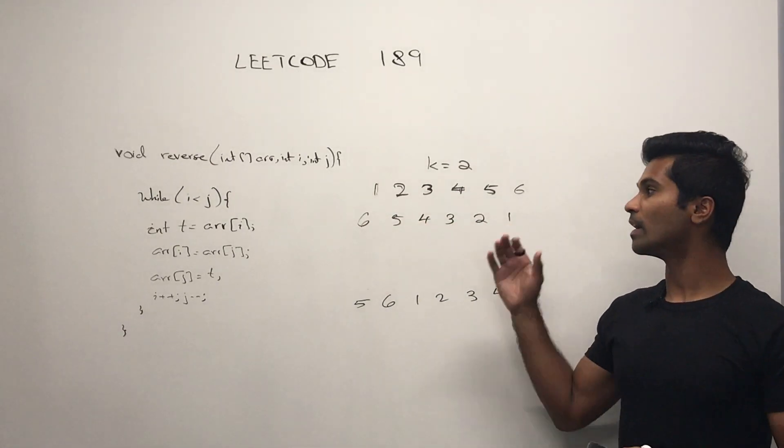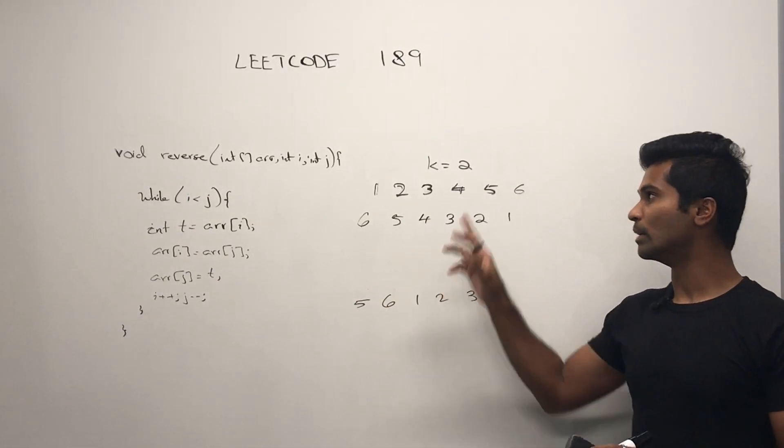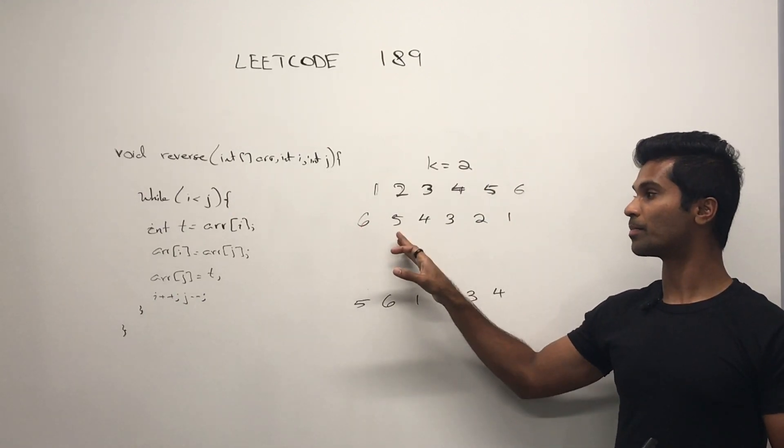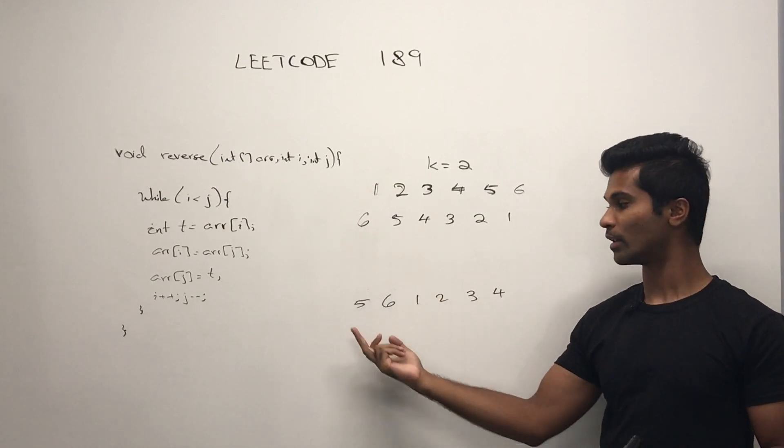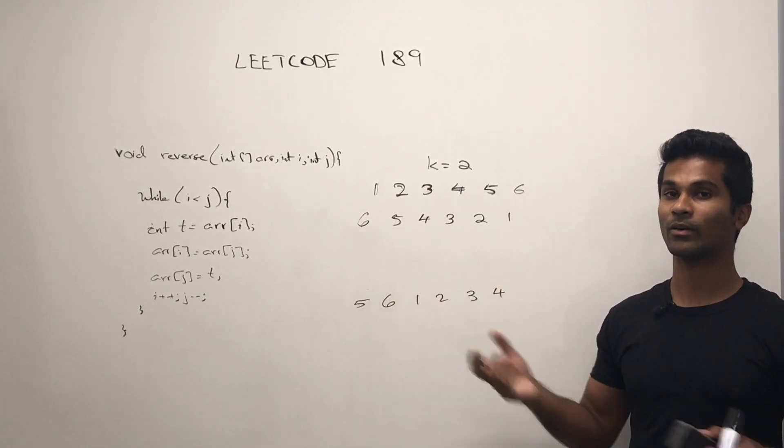Well, the first step is simply going to be to just rotate the whole array. So we have the elements that we need on the left side. However, they're not exactly in the right order. We know that k is equal to two, so we only need the first two of them and we need to make six and five look like five and six. So we can just simply use this subroutine again and make it look like this.